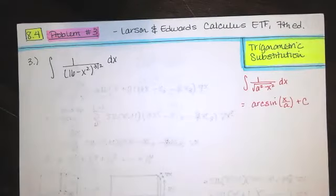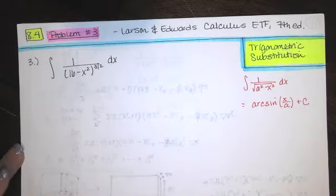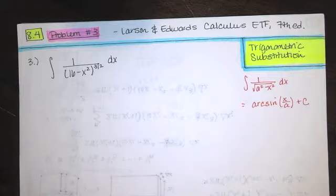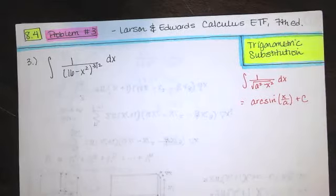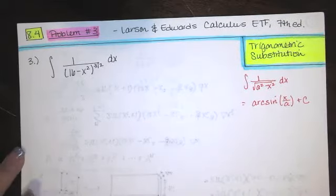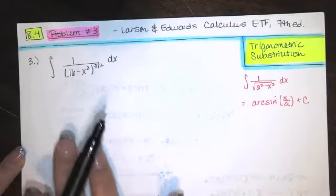In this video, we solve problem number three from section 8.4 of the Larson and Edwards Calculus Early Transcendental Functions text, 7th edition. This is a problem from the trigonometric substitution section.